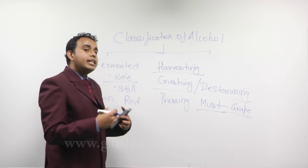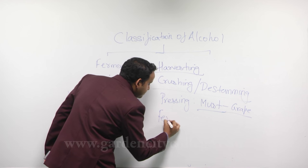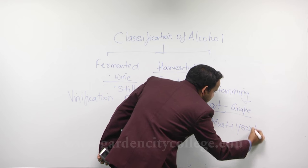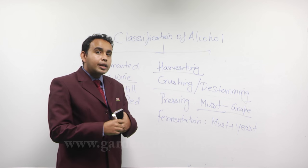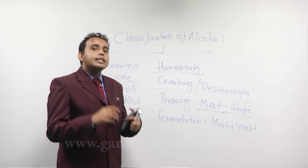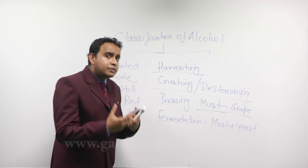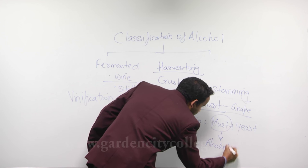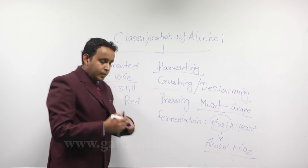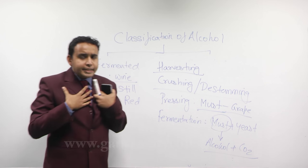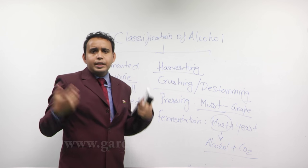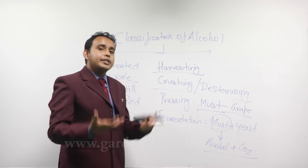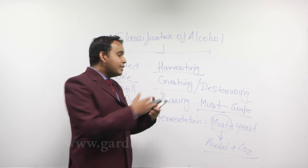The next step is fermentation. The must is added with yeast — the yeast used is called wine yeast, which in technical terms is called Saccharomyces cerevisiae. The yeast acts with the natural sugar in the must and converts it into alcohol and carbon dioxide. It's like us human beings — we eat food and excrete waste. The yeast eats sugar and converts it into alcohol and carbon dioxide, which we drink as wine. Without yeast, there is no wine.